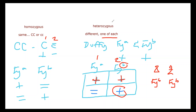For the heterozygous one, you have one from each — an FYa from mom and an FYb from dad — that's why you have a positive in both. So heterozygous is when you have one of each, and homozygous is when you have the same. It's really important to know what the antigen partners are: big C goes with little C, Duffy A and B, Kell A and B, big E and little E, M and N, big S and little S.